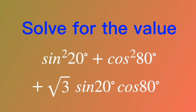Hello, my friends. Today we are going to solve for the value of the trigonometric expression: sine squared of 20 degrees plus cosine squared of 80 degrees plus square root of 3 times sine of 20 degrees times cosine of 80 degrees. If you want to have a try, please pause the video.